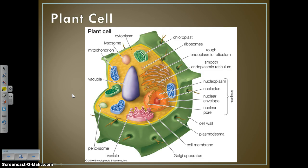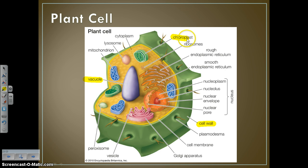Last on the list are the major plant cell structures. Plant cells have structures that other cells don't have. The three you need to know are: the vacuole, which is the large central organelle used for storing water; the cell wall, which is made of cellulose; and the chloroplast, which is where photosynthesis happens. Of course this is a eukaryotic cell, so we've also got all the major membrane-bound organelles and a nucleus.